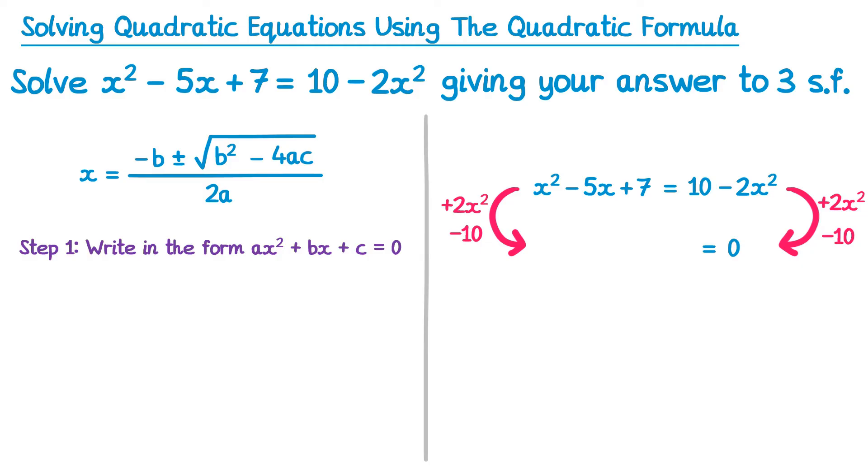On the left side we've already got 1x squared, and we're adding 2x squared, so there's now 3x squared. The minus 5x can stay as it is, because we're not adding or taking away any x's, and then we've got 7, and we're going to take away 10. 7 take away 10 is negative 3. So now this is in the correct form, ax squared plus bx plus c equals 0.